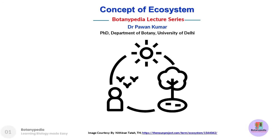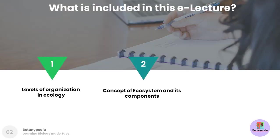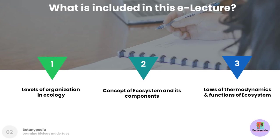You are watching a video lesson that is part of the Botanypedia lecture series. In this e-lecture, we are going to understand the concept of ecosystem. I am Dr. Pawan Kumar, and this lecture covers three main aspects: the levels of organization in ecology, the concept of ecosystem and its components, the laws of thermodynamics governing energy flow and matter cycling, and a summary of ecosystem functions.